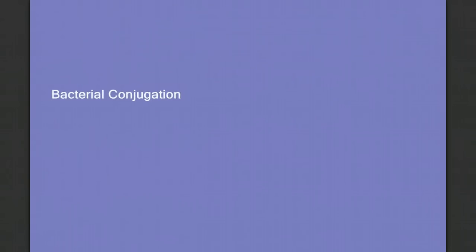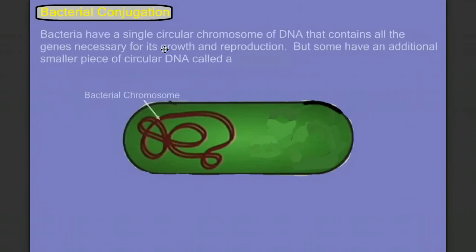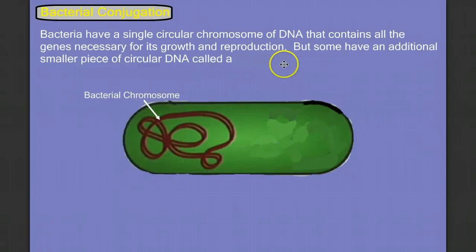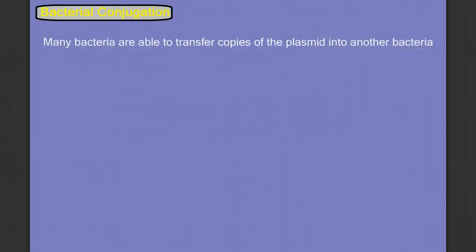Let's look at conjugation. To conjugate means to come together. When we look at bacteria, we see that it has its main chromosome — this big circular chromosome that has all the genes necessary for its growth and reproduction. But sometimes bacteria will have extra smaller pieces of circular DNA called plasmids, and these plasmids will carry extra non-essential genes. But not all bacteria have a plasmid.